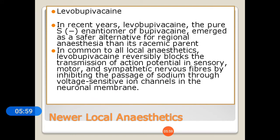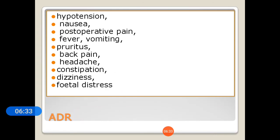A newer local anesthetic is levobupivacaine. In recent years, levobupivacaine, a pure enantiomer, has emerged as a safer alternative for regional anesthesia than its racemic parent. Like all local anesthetics, it reversibly blocks transmission of action potentials in sensory, motor, and sympathetic nerve fibers by inhibiting the passage of sodium through voltage-sensitive ion channels in the neuronal membrane. Adverse effects include hypertension, nausea, postoperative pain, fever, vomiting, pruritus, back pain, headache, constipation, dizziness, and fetal distress.